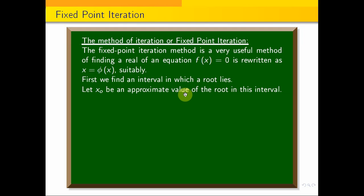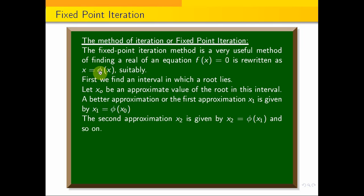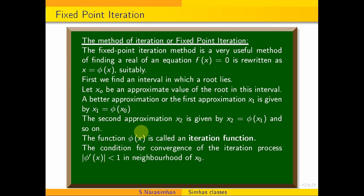We find x0, the approximate value, and substituting into x = φ(x) we find x1. Then from x1 we find x2, and so on. φ(x) is called the iteration function. We use x0 as the initial approximate value and iterate to find successive approximations.